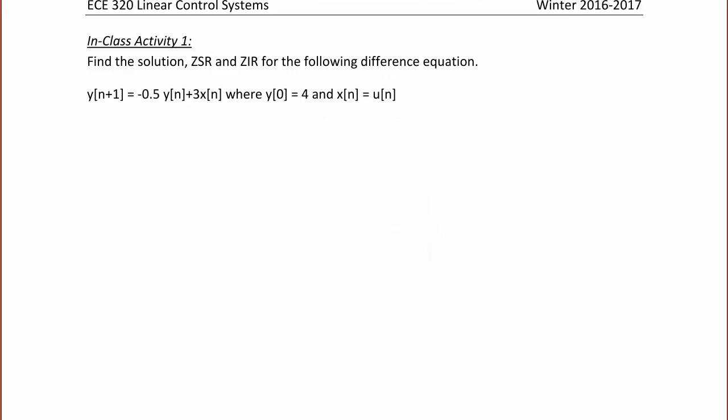In class activity 1, find the solution — zero state response and zero input response — for the following difference equation: Y(N+1) = −0.5 Y(N) + 3 X(N), where Y(0) = 4 and the input X(N) = U(N).